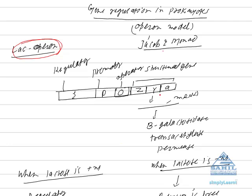The different parts of operon - one of the important parts is structural gene. In lac operon, it is represented by genes Z, Y and A.